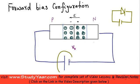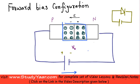You have connected an external voltage. This external voltage corresponds to an electric field oriented in this direction. This electric field opposes the electric field that has been set up in your depletion region. Therefore, the net electric field becomes less than what it was earlier.